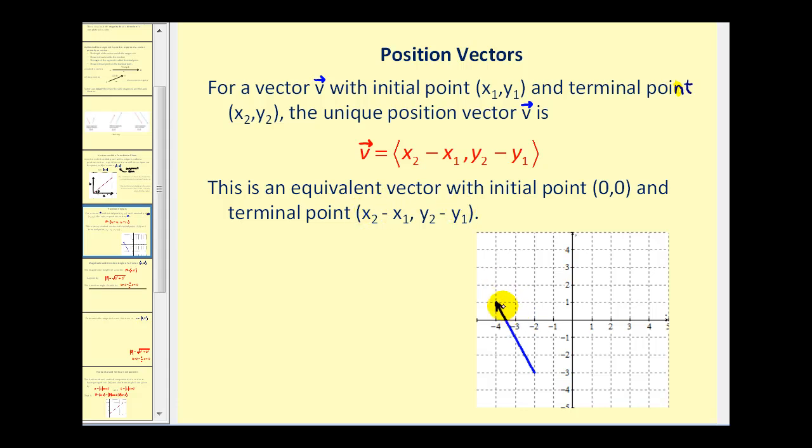Let's write this vector as a position vector. This is the point (-2, -3). This is the point (-4, 1). So if this is vector v, we can write this as a position vector by subtracting the horizontal components: -4 minus -2 and 1 minus -3. So this would be ⟨-2, 4⟩.